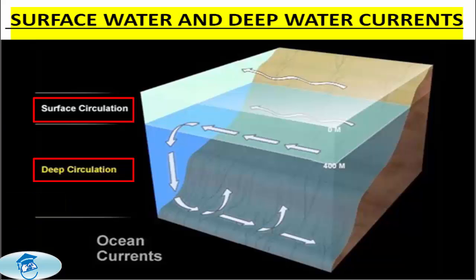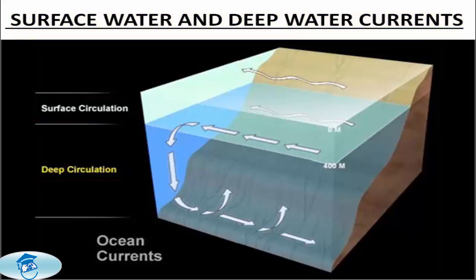Deep waters sink into the deep ocean basins at high latitudes, where the temperatures are cold enough to cause the density to increase. There are many factors that cause ocean currents — let's go through them.